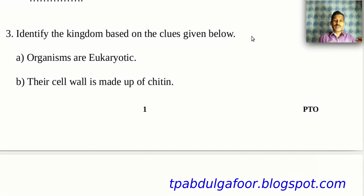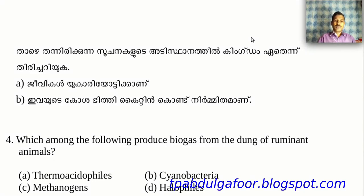The third question: Identify the kingdom based on the clues given below. The organisms are eukaryotic. This is the kingdom Animalia. This is the eukaryotic animal.